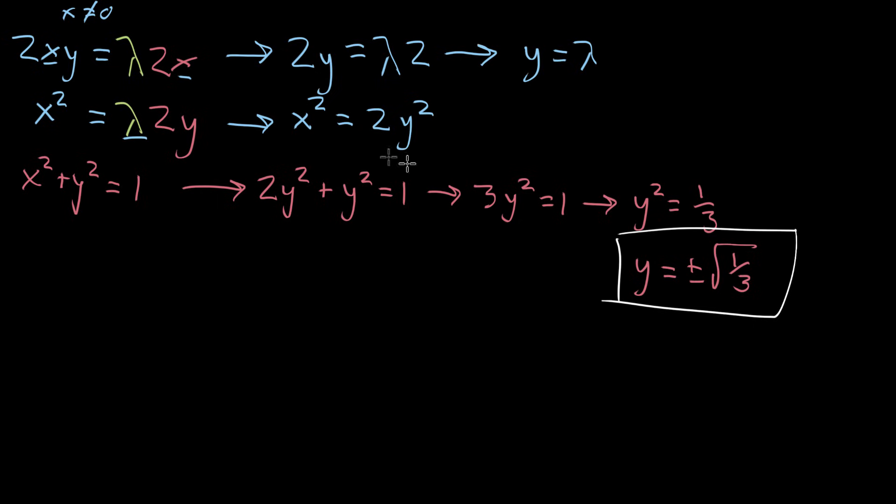Now, if y squared is equal to 1 third, then when we look up here and we say, hmm, two times y squared, that's gonna be the same thing as two times 1 third. So two times 1 third, so if x squared is equal to 2 thirds, what that implies is that x is equal to plus or minus the square root of 2 thirds. And then there we go, that's another one of the solutions.